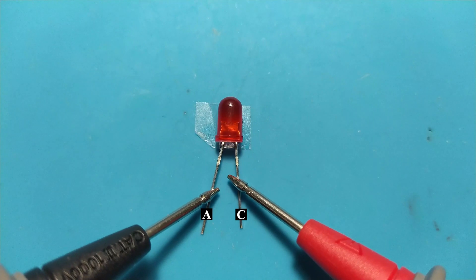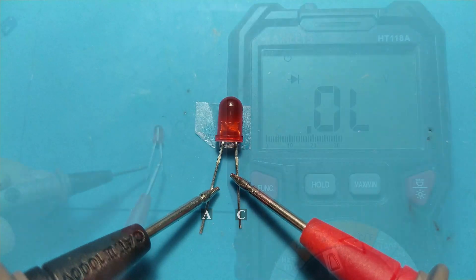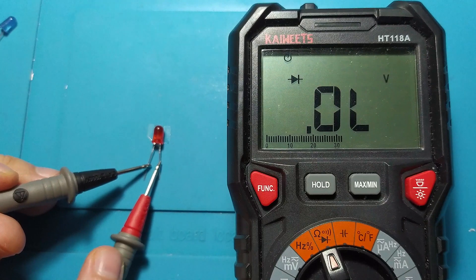With the black probe on the anode and the red probe on the cathode, the LED will remain off, and the multimeter screen will not show any voltage drop.